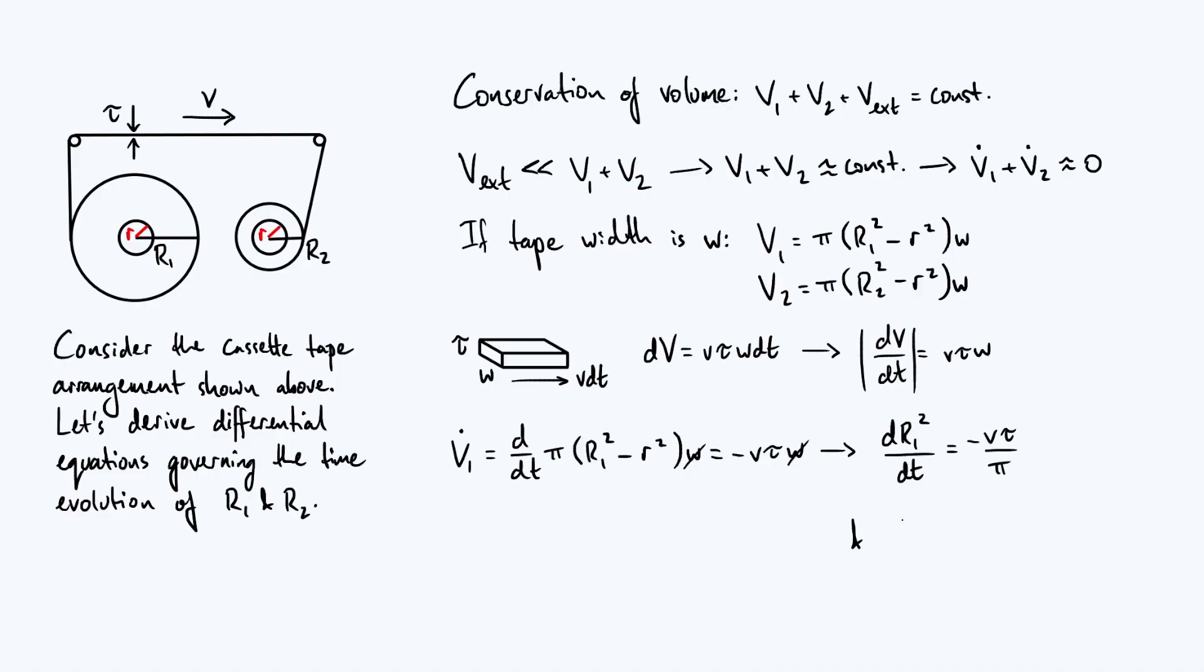By exactly the same logic, you're going to end up with a differential equation for r2 that says d(r2 squared) by dt is equal to positive v τ over π, and that is the pair of differential equations that we set out to derive.